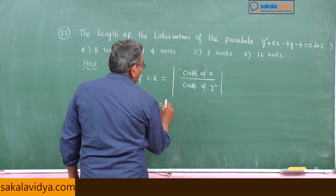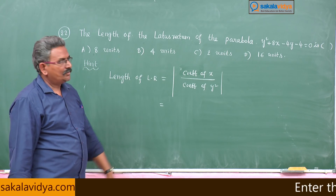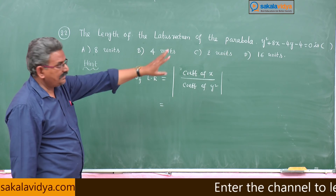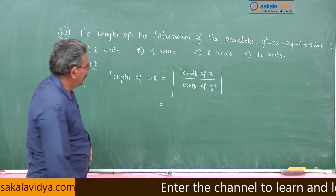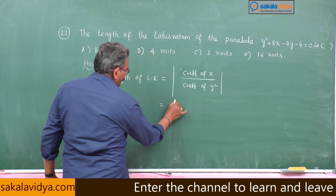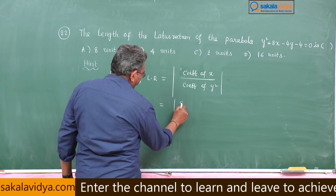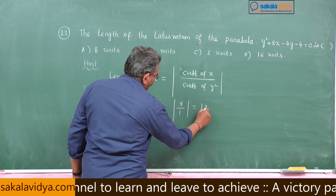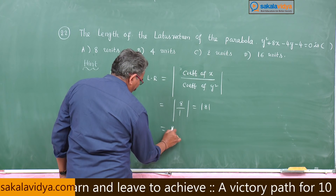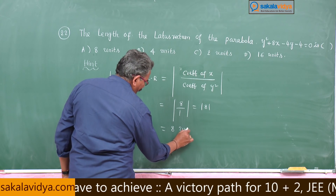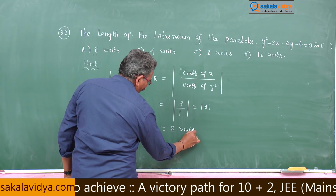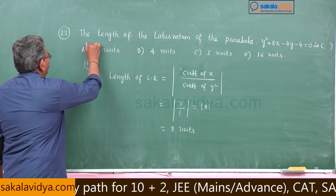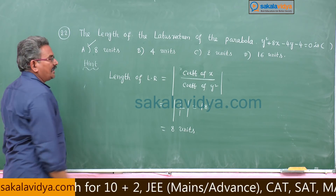Regarding this problem, the coefficient of x is 8, and the coefficient of y² is 1. So this is equal to modulus of 8 by 1, which is modulus of 8, giving 8 units. So which is the right option? A will be the right option.